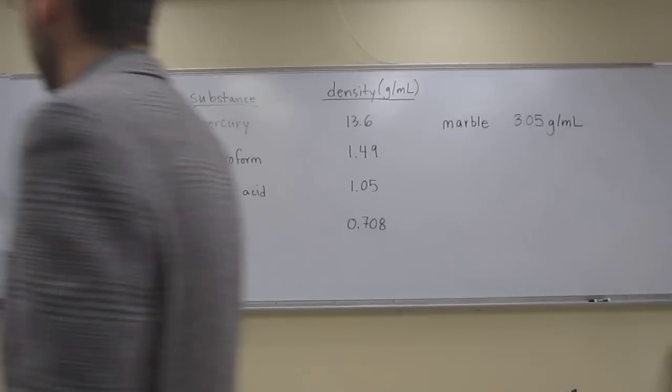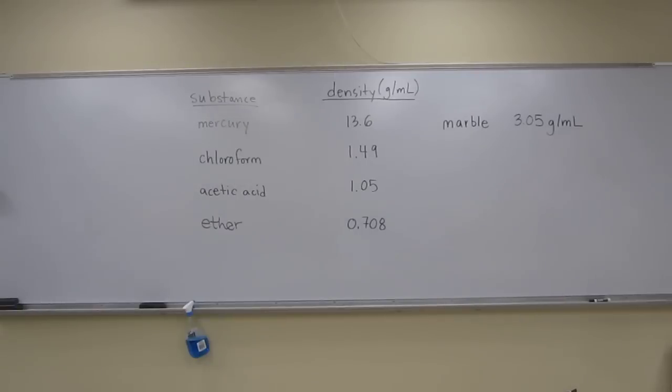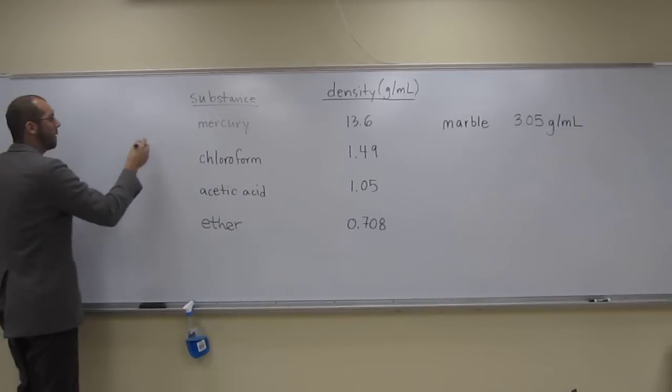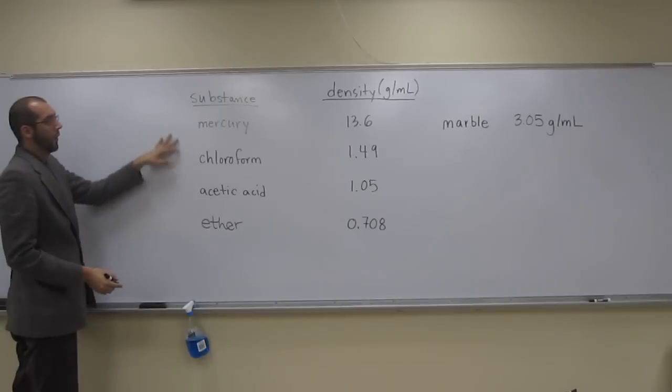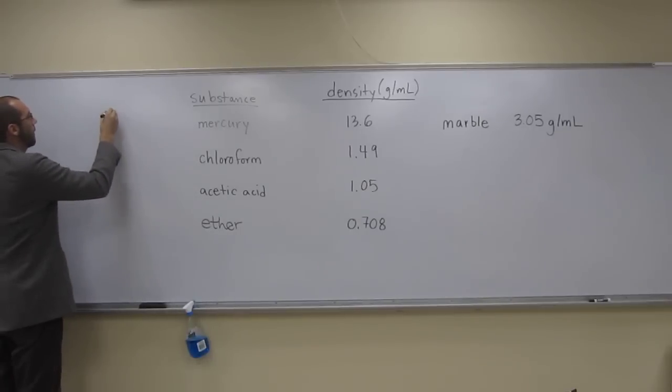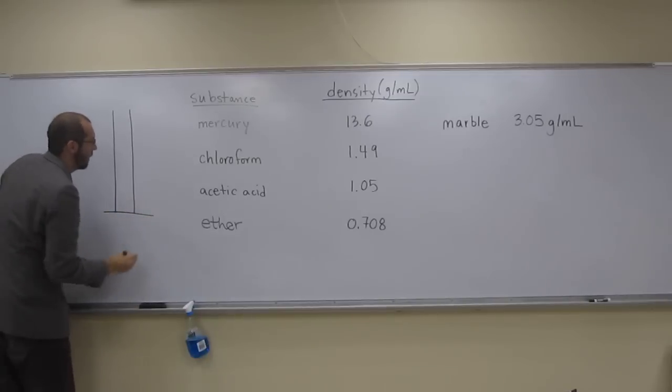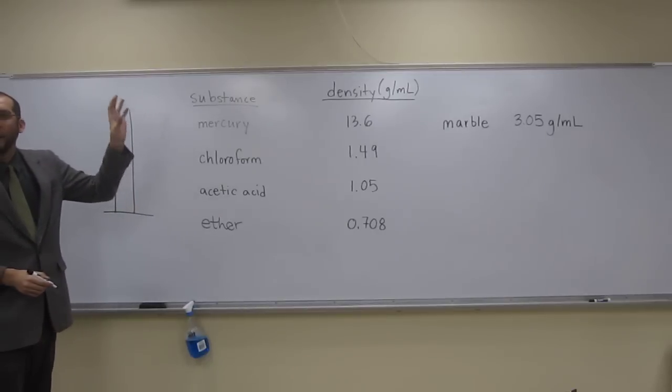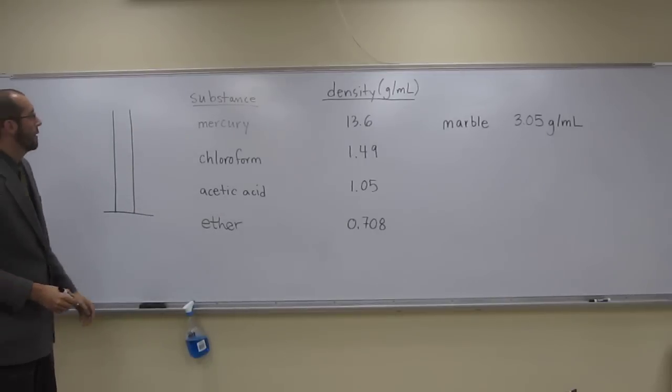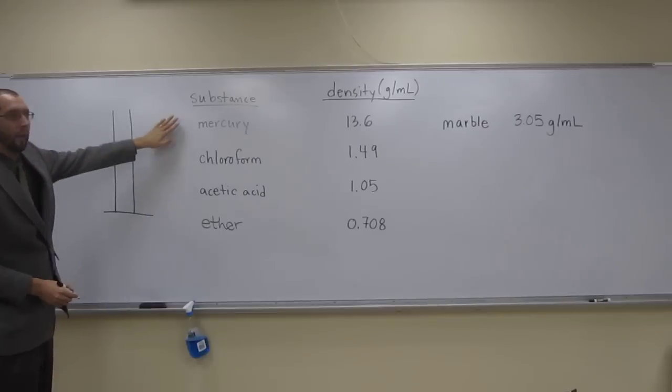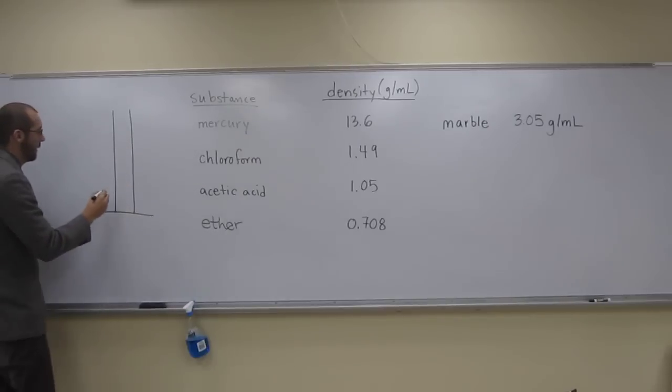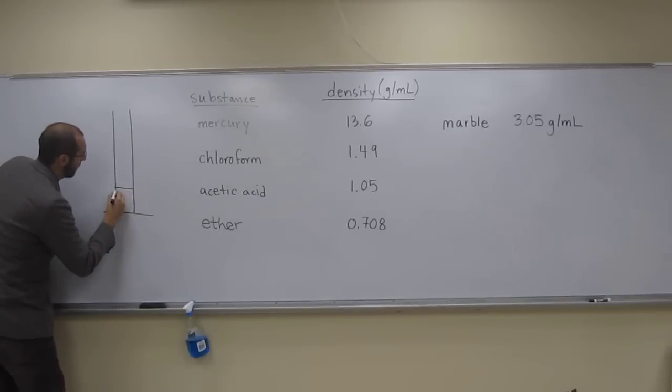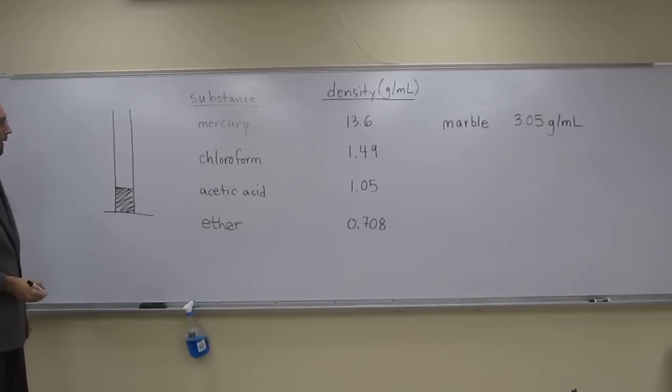So let's draw a cylinder and put these four liquids in order. The one on the bottom is going to be the one with the highest density. Which one is that? Mercury, right? So mercury is going to be down here at 13.6.